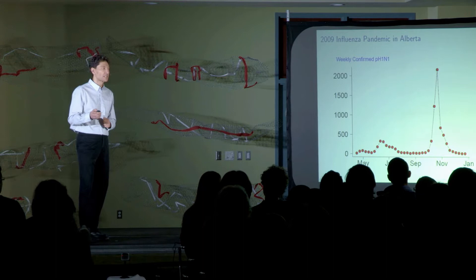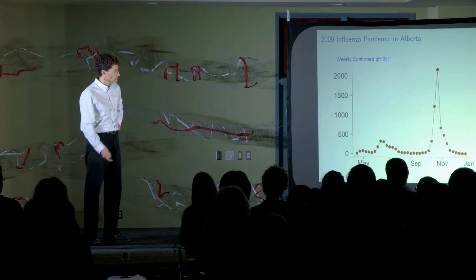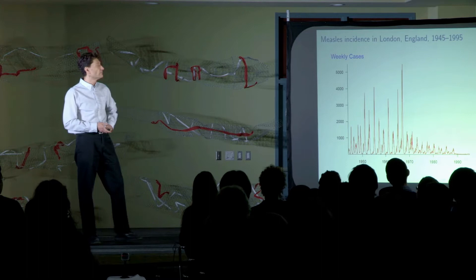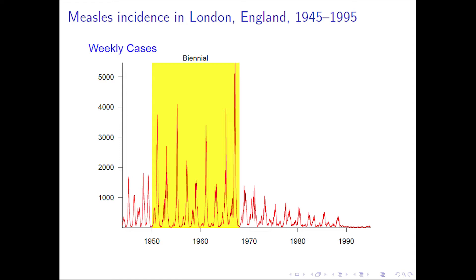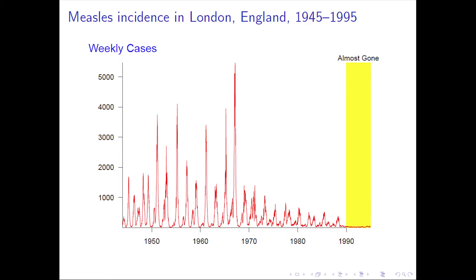Another example is a very different pattern of epidemics — this time for measles in London, England, in the second half of the 20th century. You can see from a glance that there was a recurrent pattern of epidemics of measles in London. Initially, in the late 1940s, there was an epidemic every single year. Then from about 1950 to 1968, strangely, it changed to every second year. And then after 1968, the pattern of epidemics became quite irregular, quite different from what had happened before, until about 1990 when it seemed to almost disappear.